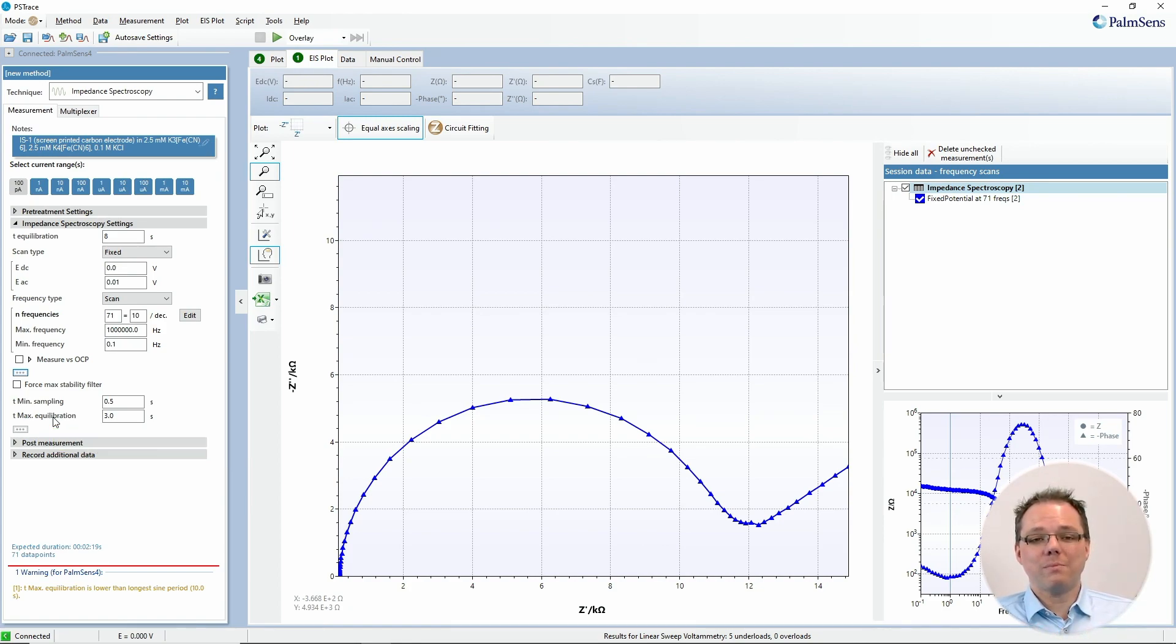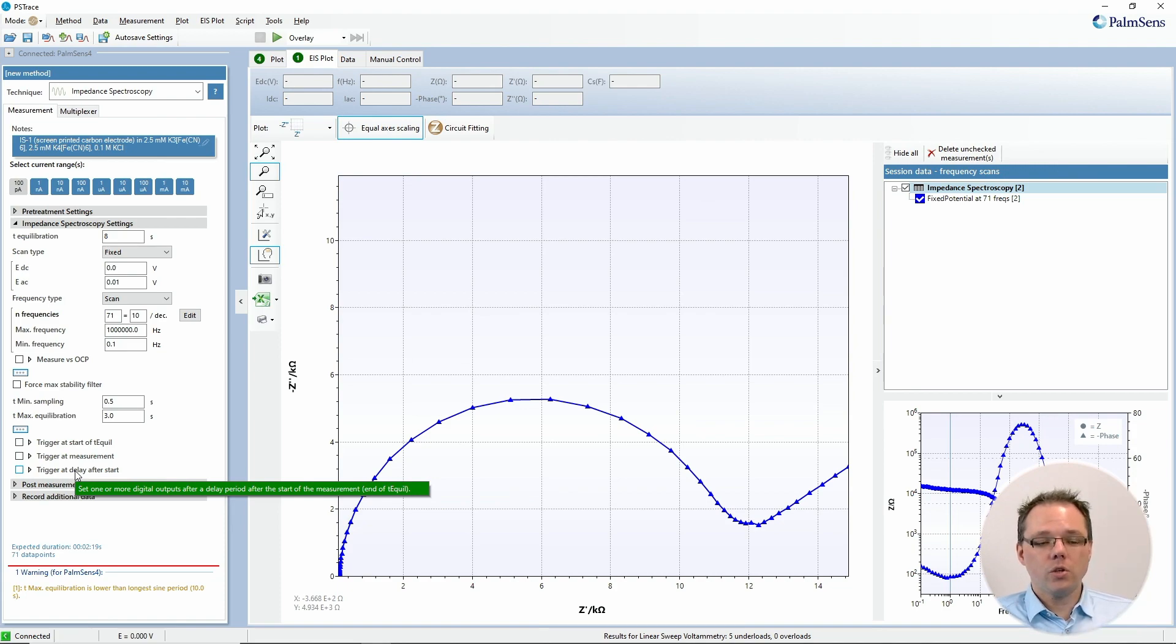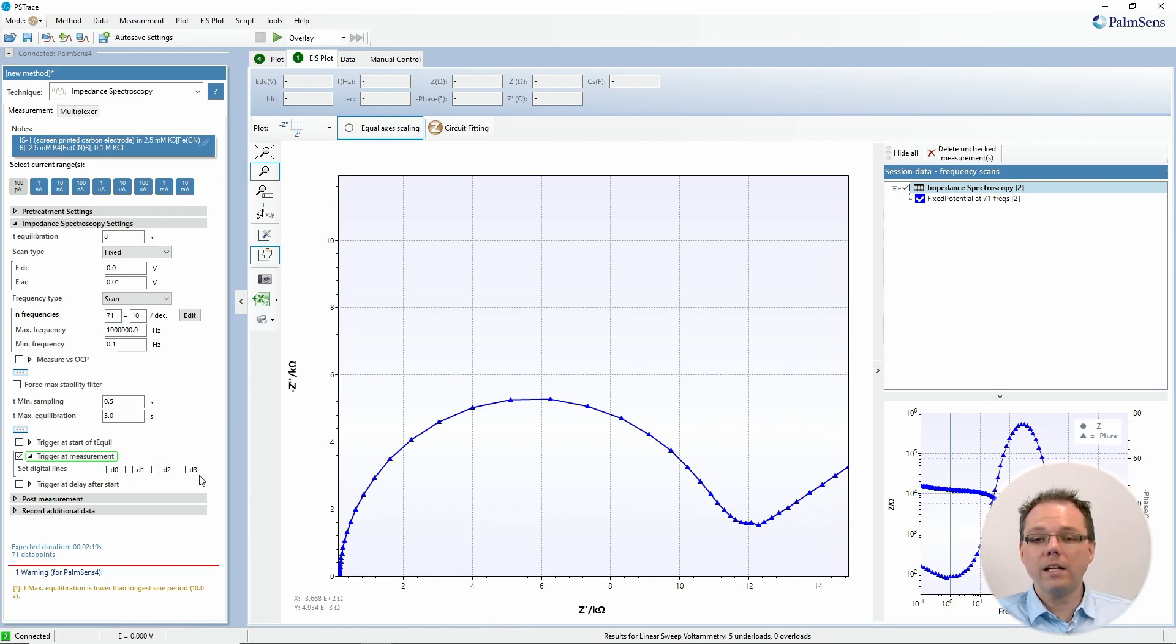The maximum equilibration time does the opposite. At very low frequencies measurements take very long, and usually we wait at least a full sine wave till we start recording values so the system has time to equilibrate. But at very low frequencies this can take very long and maybe you want to cut this short. The last advanced options are the trigger options. You can use the auxiliary port, so at the start of a measurement you can set the digital lines to certain values and connect to some kind of photodiode, spectrometer, or light source. This correlates your impedance measurement with the start of another external device.